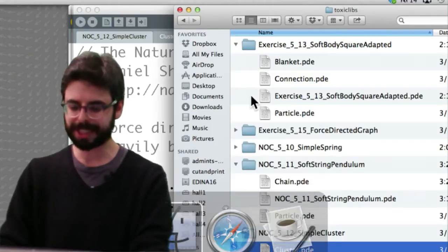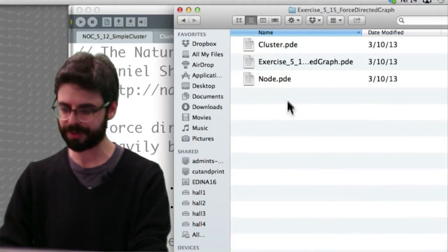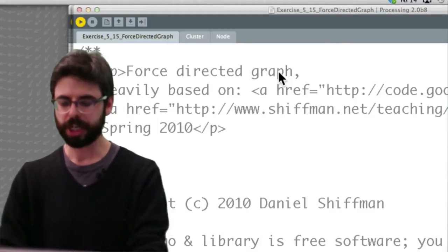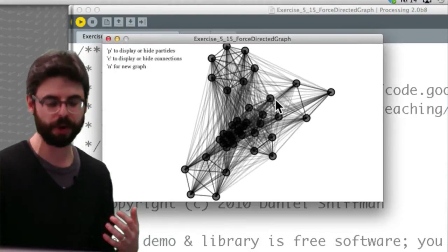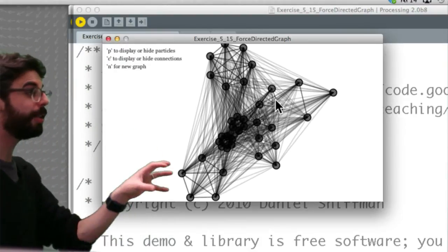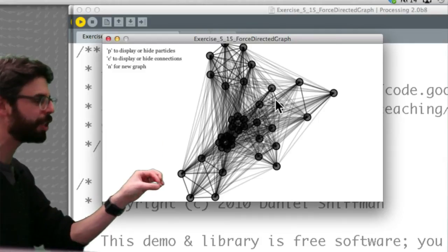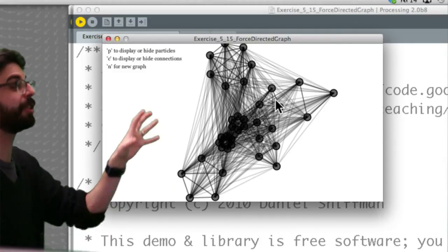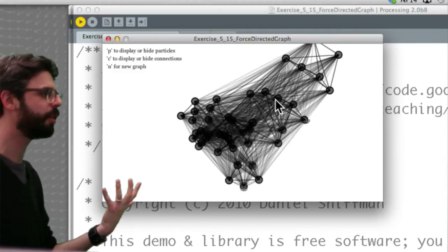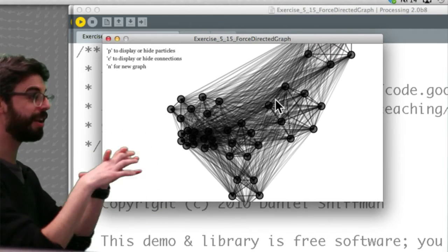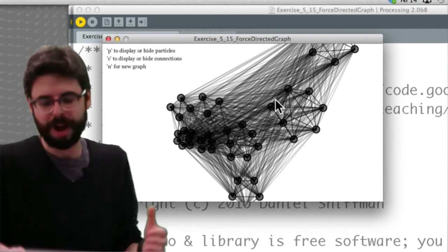You can look at a second example, exercise 5.15, which takes it a step further. There are a bunch of clusters that have their internal connections, and those clusters are connected externally to other clusters with different kinds of springs.